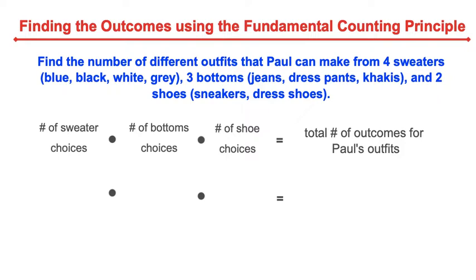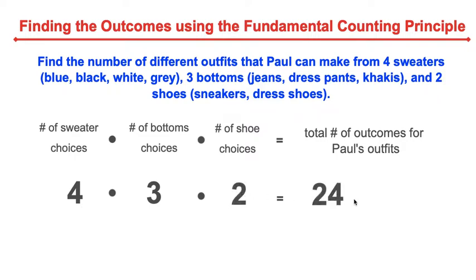So let's think about the number of sweater choices that Paul has — he's got four. And the number of bottom choices that Paul has, which are three. And the number of shoe choices that he has, two. If we find the product, 24, that will tell us how many different outfits that Paul can put together.